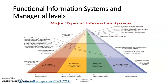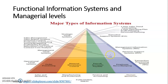Analyzing functional information systems with managerial levels, we can see a pyramid with a top or strategic level, a middle or management level, and an operational or tactical level. The functional areas — marketing, manufacturing, finance, and human resource — cut across all levels. TPS or Transaction Processing System operates at the operational level, while Decision Support System and MIS support the management level, and Executive Support System supports the strategic level.